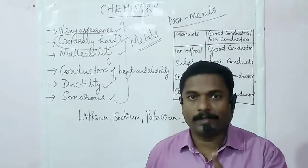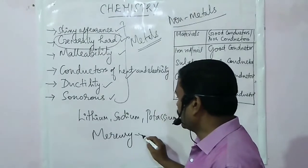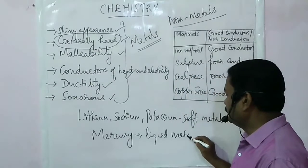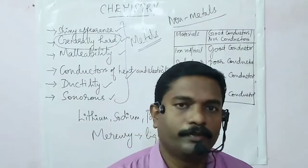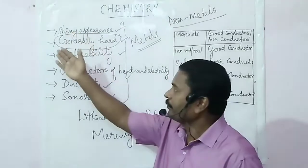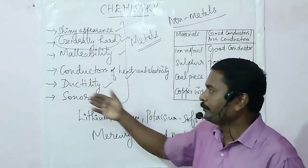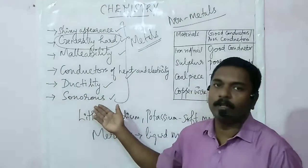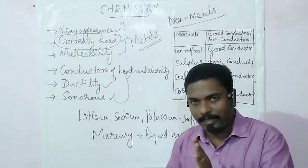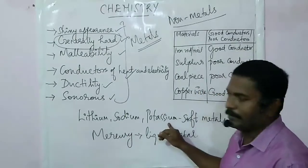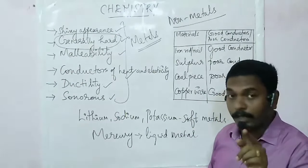One more exception: there is one metal that exists as a liquid. Can you say the name? Yes — mercury. Mercury is the only liquid metal. So these are exceptions. The main physical properties of metals are: they are lustrous, generally hard, malleable, good conductors of heat and electricity, ductile, and they produce sound on striking so they are sonorous. Exceptions: lithium, sodium, and potassium are soft metals that can be cut with a knife, and mercury is a metal that exists in liquid form.